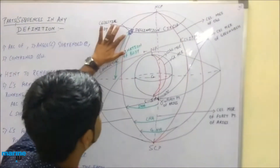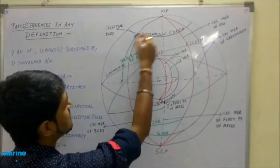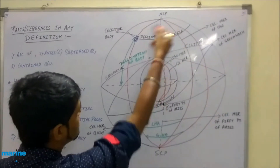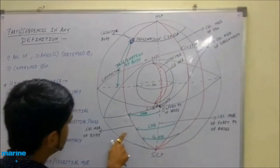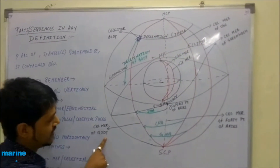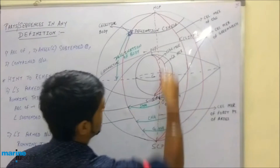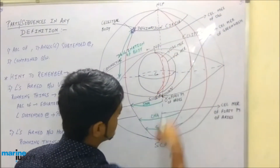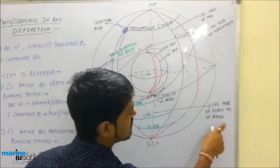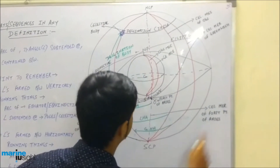This is a celestial body. The celestial meridian passing through it becomes the celestial meridian of the body. The celestial meridian passing through the first point of Aries is known as the celestial meridian of the first point of Aries.